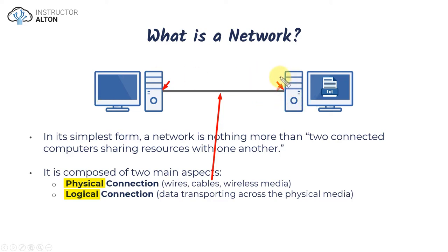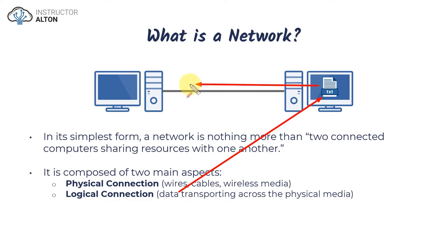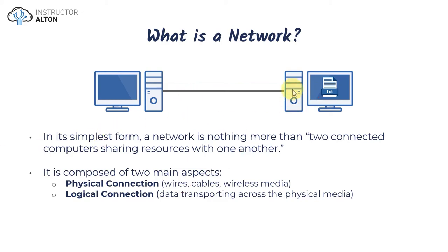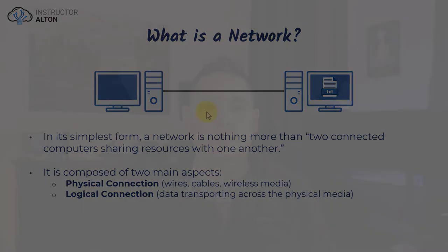In regards to the logical connection, we're talking about the data itself — this text file — and the means in which it's logically sent across the wire in bits of data, electrical signals, through protocols, which you'll also learn about in this course. So when we're talking about a network, we have a physical component and a logical component, and in its most basic form a computer network is nothing more than two computers connected together with a cable so they can share resources back and forth.